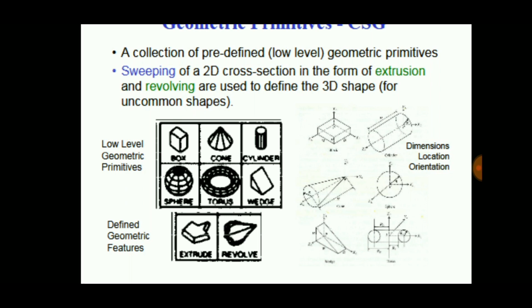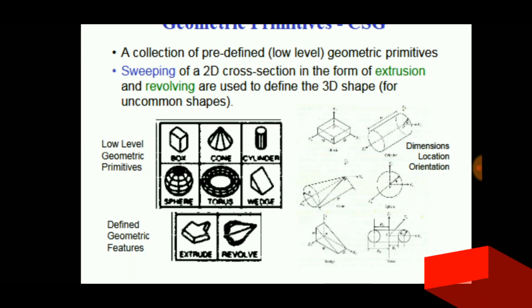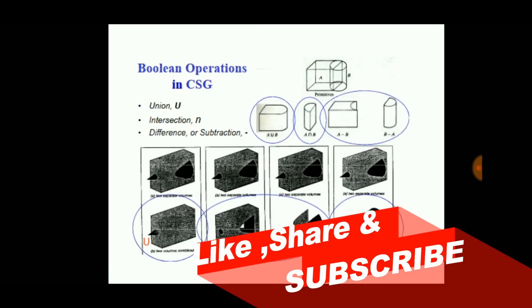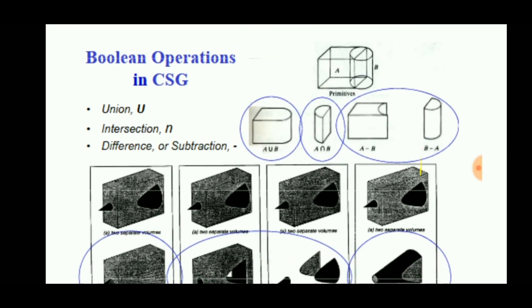It is a collection of predefined geometric primitives and sweeping of a 2D cross-section. If we sweep a rectangle, we can get a cylindrical shape by extrusion and revolving commands. Then Boolean operations...